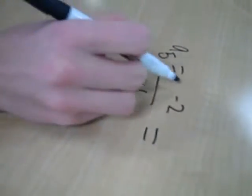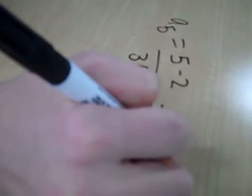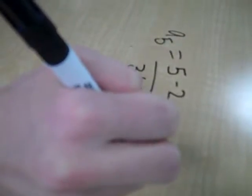For a sub 5, you place 5 in for n. So 5 minus 2 and 3 times 5. It would be 3 over 15.